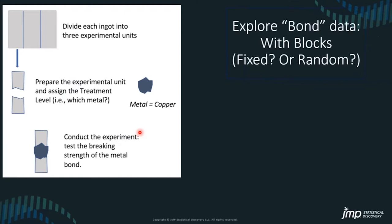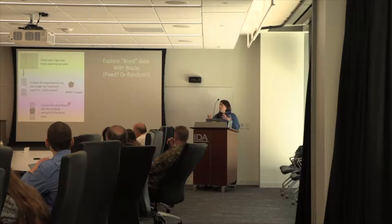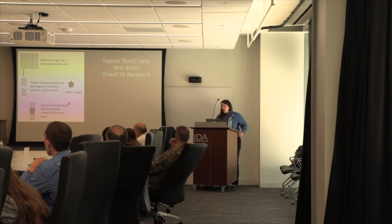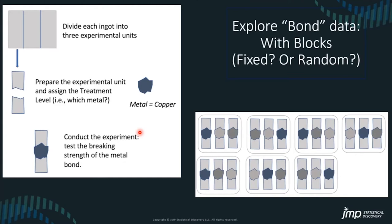But what happens if we start with an ingot of metal that we divide into three experimental units, apply our bonding treatment, and then break? Now we have a block — three experimental units that all came from the same ingot, which are probably going to behave similarly when welded back together. Those ingots will have differences between them, so we have a restriction on our randomization. This is a randomized complete block design: three treatments, three experimental units within each block from the ingots.